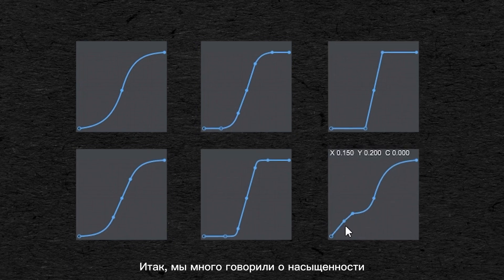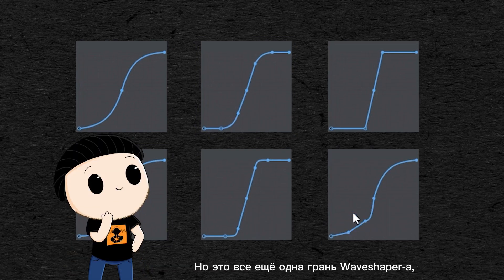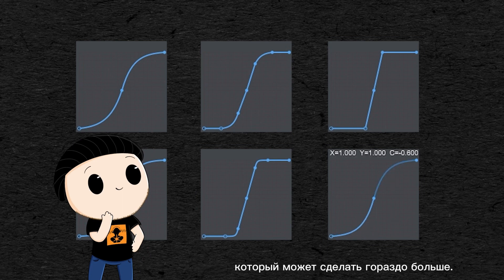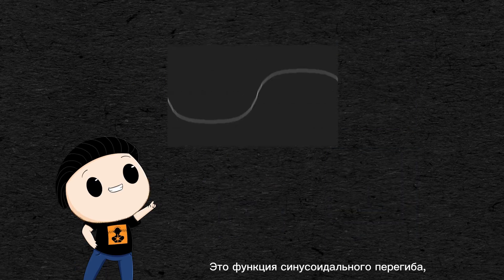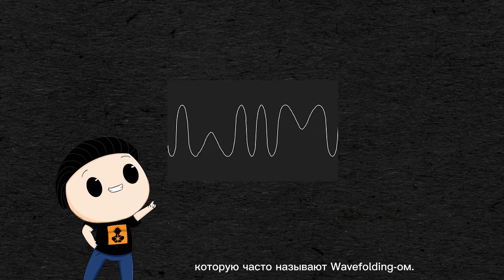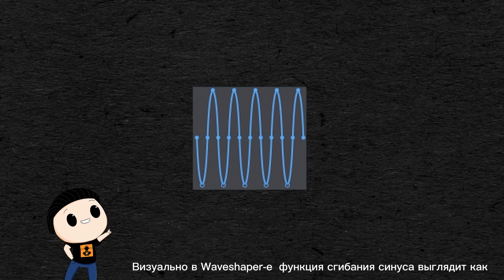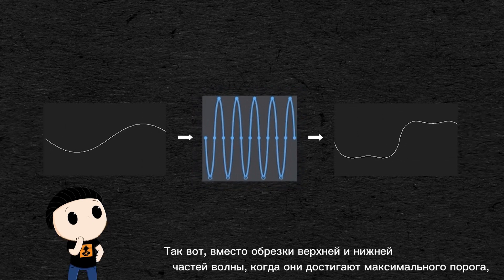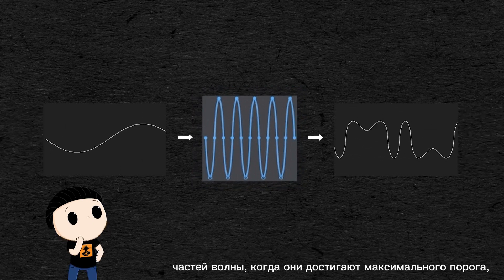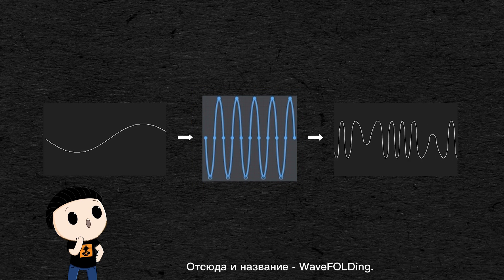So there we talked a lot about saturations, and there's a lot you can do with this to model your sound. But that's still one facet of the waveshaper, which can do much more. There is one last type of wave shaping I would like to talk about, and that is the sine fold function, also often called wave folding. Visually on a waveshaper, the sine fold function looks like a sine wave that goes back and forth between the top and the bottom of the graph. What it does is that instead of clipping the top and the bottom of the waveform when it hits the maximum threshold, it folds it back on itself — hence the name, wave folding.